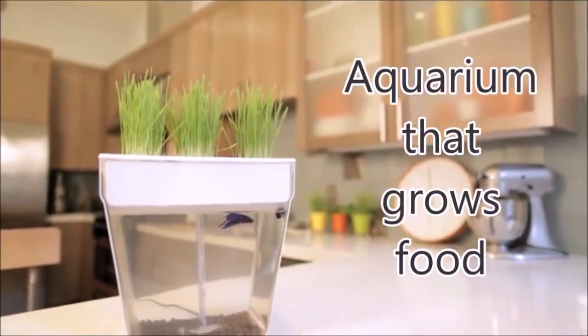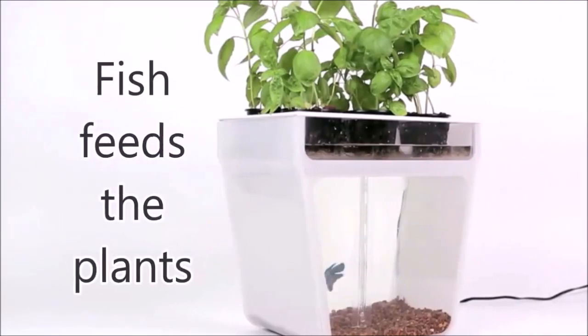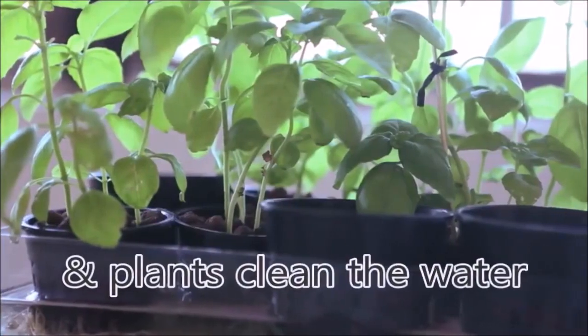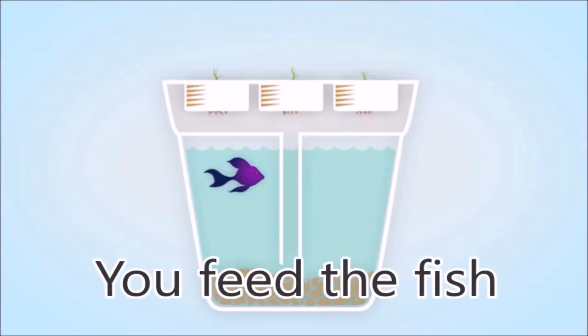Aquafarm is a self-cleaning fish tank that grows food. The fish feeds the plants and the plants clean the water. It's a small sustainable ecosystem right on your kitchen counter. The fish poo and pee, and all that waste...